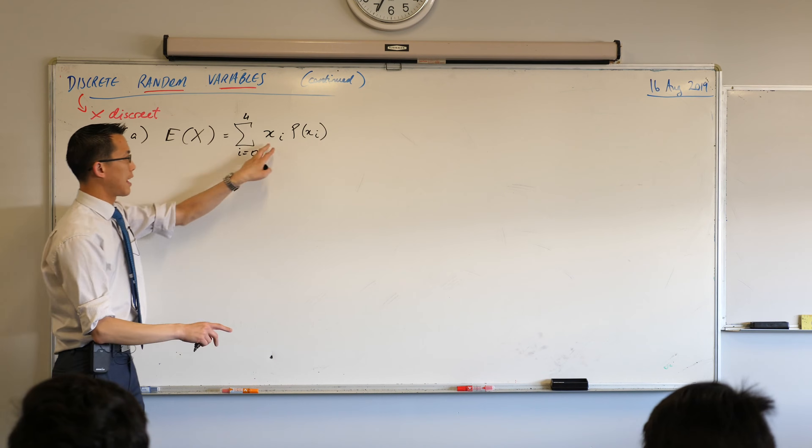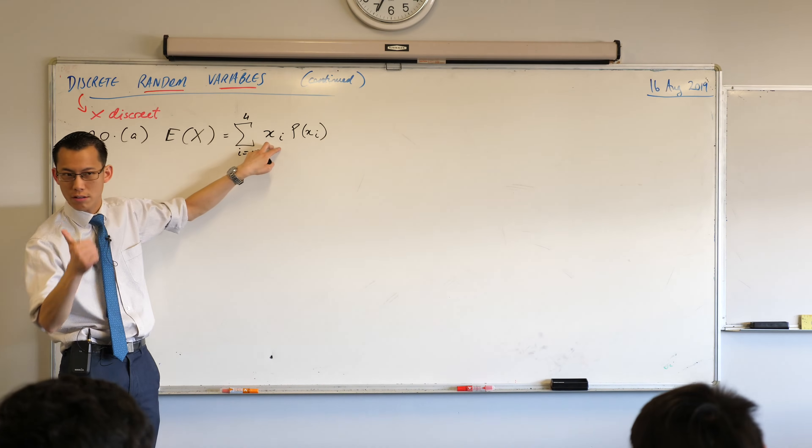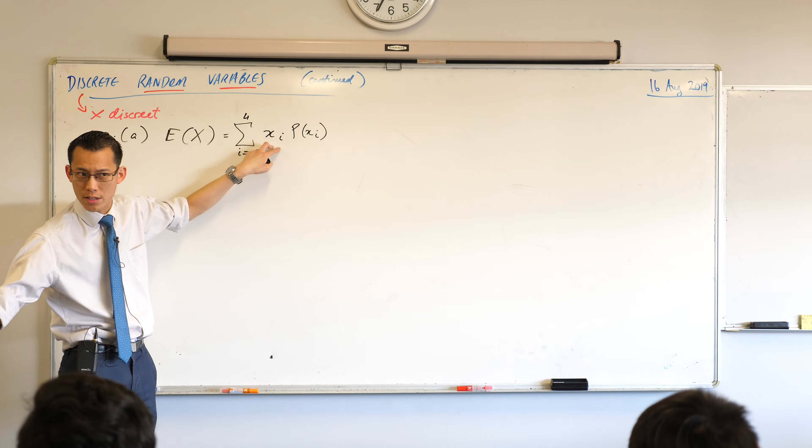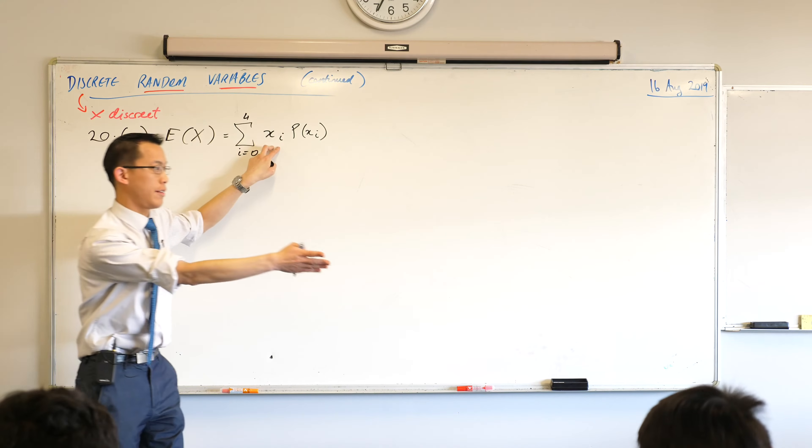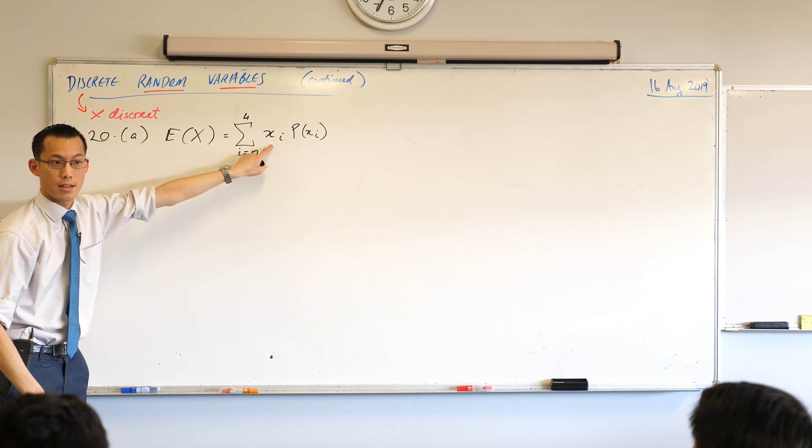So I'd go from 0 up to 4. This is not to be confused with what these x values are, are not 0, 1, 2, 3, 4. What are the values that are relevant for me? Have a look. 2, 3, 4 and 5. Very good. So that's what these numbers are going to be.